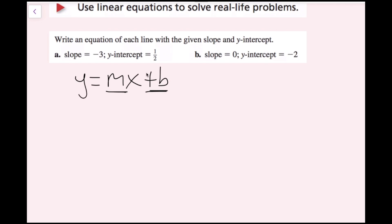In this case, I'm given the slope and the y-intercept, so all I need to do is plug in these values. I ask my students, what do we do with our Chromebooks at night? We plug them in. So we're going to plug in our slope for m and our y-intercept for b. Our equation is y equals negative 3x plus 1 and a half.